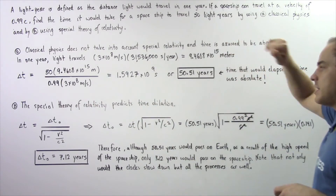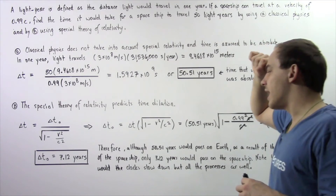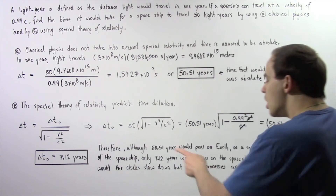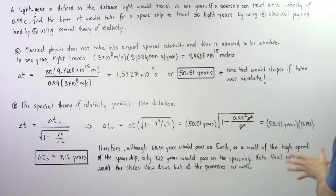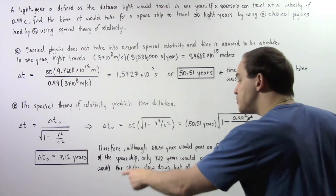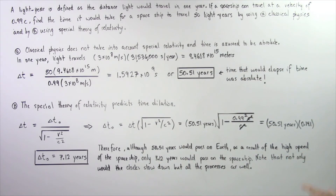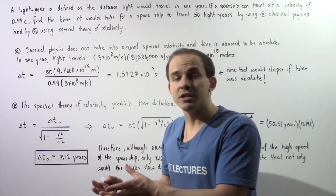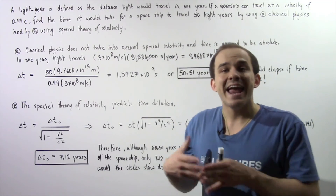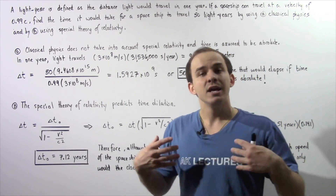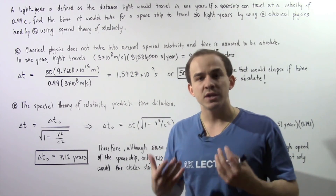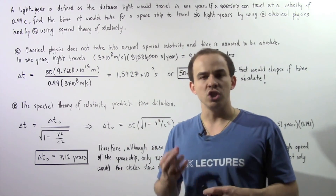Using the special theory of relativity and time dilation: although 50.51 years would pass on Earth due to the high speed of the spaceship, only 7.12 years would pass on the spaceship. Note that not only would clocks slow down on the spaceship, but aging would also slow down — all biochemical processes inside the human body would slow down as well.